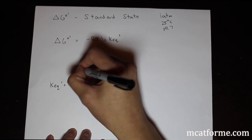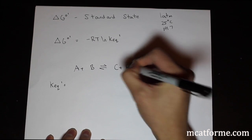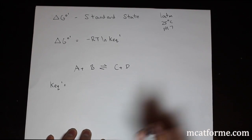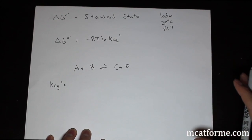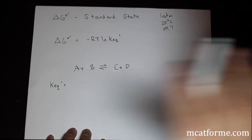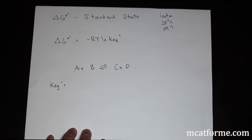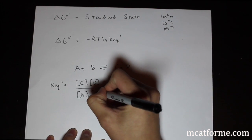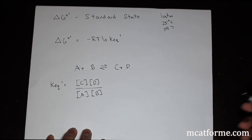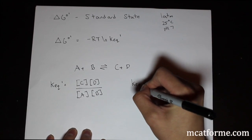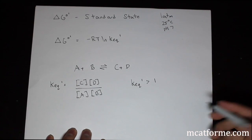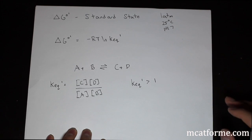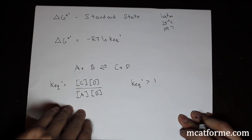So what is K'eq? If we have the reaction A + B ⇌ C + D — notice the double arrow indicating equilibrium — that means A + B is converting to C + D at the same rate that C + D is converting back to A + B. So K'eq = [C][D] / [A][B]. If K'eq is greater than 1, the concentration of products C and D is higher than reactants at equilibrium. The reverse is true if K'eq is less than 1.